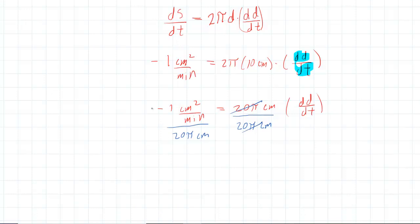This is a little tricky over here. We'll have negative 1 over 20π, so that's not too bad. But then in terms of the units, we're looking at these units right here. Let's come off on the side and analyze that. We would have centimeters squared over minutes, and then we're dividing that by centimeters.